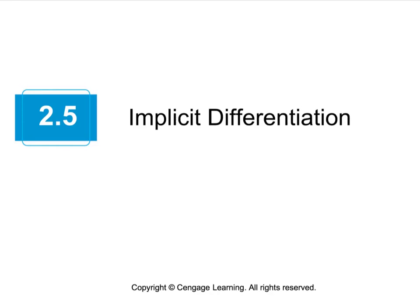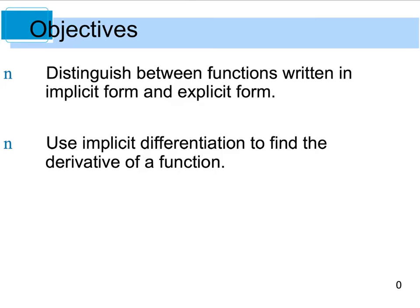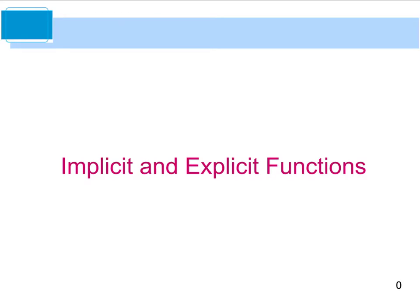Hello and welcome back to chapter 2. Today we're going to look at implicit differentiation in section 2.5. Our goals are going to be to distinguish between functions that are written in implicit form versus explicit form, and we're going to learn how to use implicit differentiation to find the derivative of a function. So first let's look at what implicit and explicit functions are.